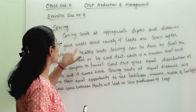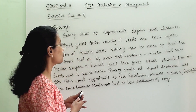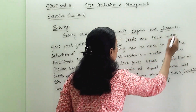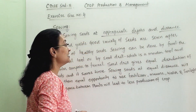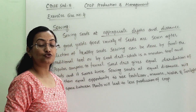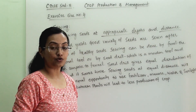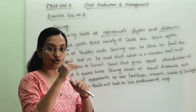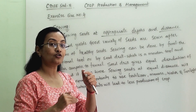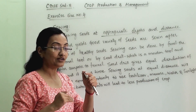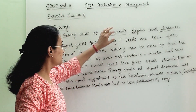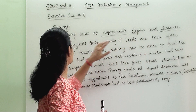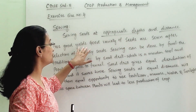Sowing seeds at appropriate depth and distance gives good yield. When we are sowing the seed, these two things we have to remember: the seed should be at appropriate depth — it should not be too close to the top or too deep. The appropriate depth is required, and proper distance gives good yield.